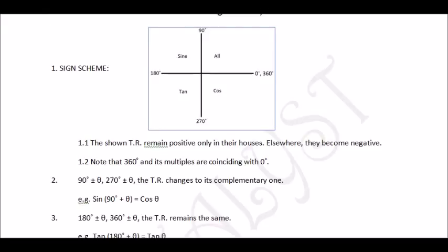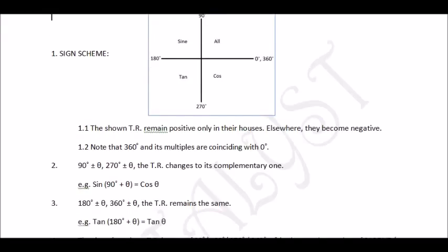The third rule is that when we deal with 180° ± θ or 360° ± θ, the trigonometric ratio remains the same. So sin(180° − θ) is simply sine θ, and tan(180° + θ) is simply tan θ. The ratio does not change for multiples of 180° and 360°.